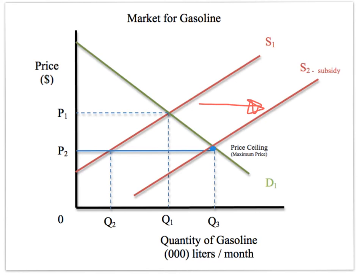So there you have it — as succinct as possible, a look at the effect of a price ceiling in the marketplace and a solution. Hopefully this will be helpful not only in the analysis version of an IB question and a paper one question, but also in the evaluation, because the subsidy solution is something you could suggest in the evaluation portion of a question. Hope that was helpful — talk to you soon.